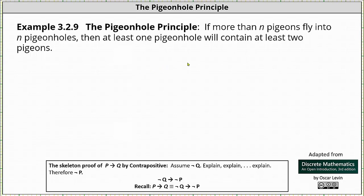Welcome to an example of a fairly informal proof of the very famous principle called the pigeonhole principle. The pigeonhole principle states if more than n pigeons fly into n pigeonholes, then at least one pigeonhole will contain at least two pigeons.